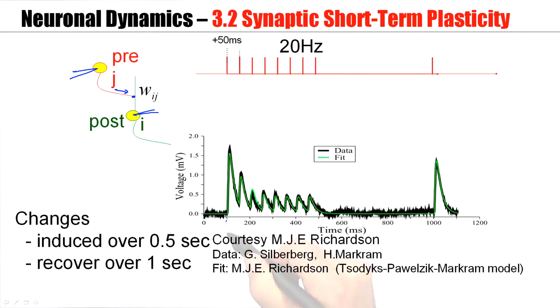Now the first spike arrives here and it causes a big response. The second spike arrives, it causes a much smaller response. The third spike, fourth spike, all of the subsequent responses are weaker. The synapse becomes depressed. So this is a synapse with depressive behavior, a depressing synapse.